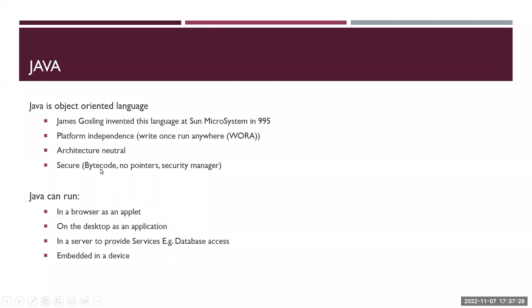Whenever you write code, you write it in a .java file. After compiling, it converts into a .class file. That's a bytecode.